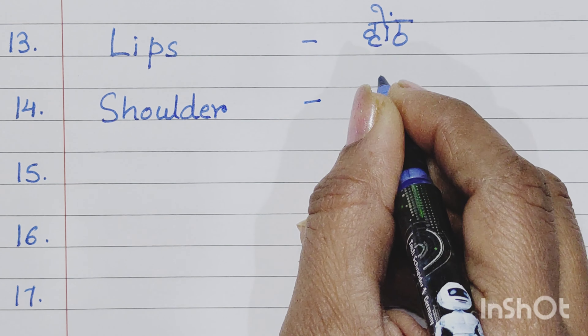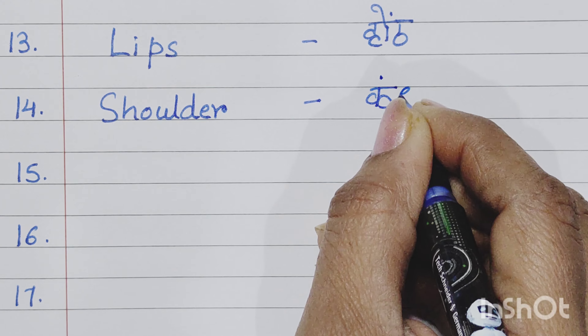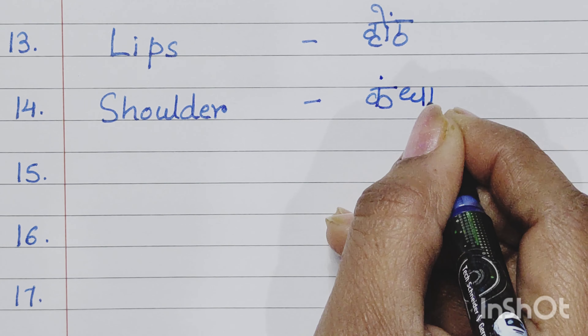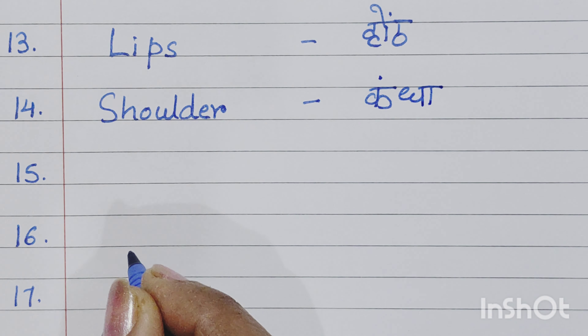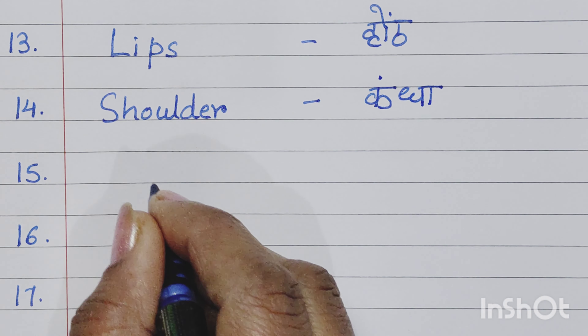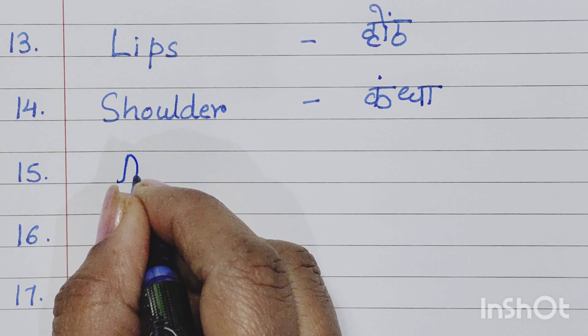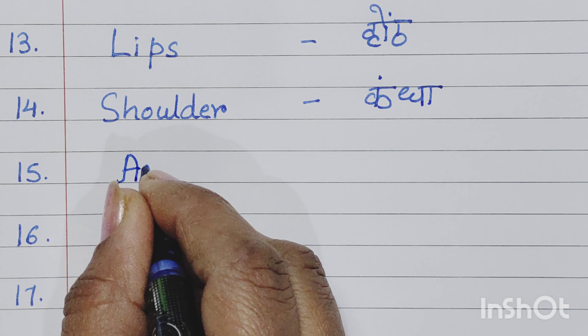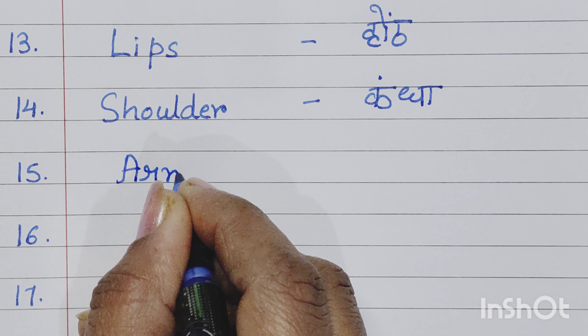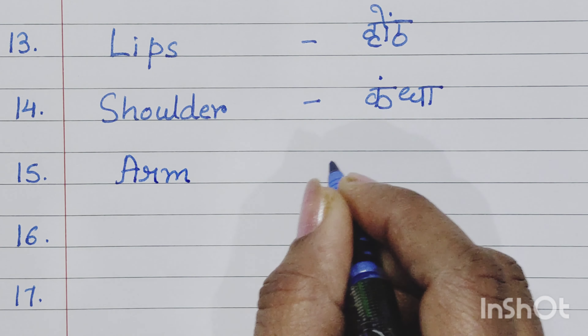Seventh is chin, C-H-I-N, chin means thuddi. These are all the features of our face.